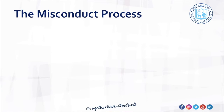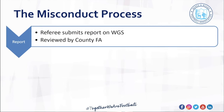Now I'll touch on what the misconduct process looks like when a report is made. The process will always start with a report coming through to us. For match-based incidents, these are generally reports submitted by the referee through the Whole Game System. But this can also include complaints made by one club against another emailed through to us. Any kind of report that comes in still constitutes a report, will always be looked at, and will always be considered — it doesn't have to go through the formal referee process.